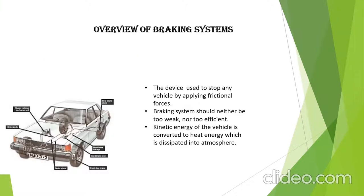Overview of braking systems. A braking system is a device or a set of devices used to stop any vehicle by applying frictional forces. A brake which serves to slow down the vehicle should not be too weak, but interestingly, when designing a brake system it should be taken care that it is not too efficient. A too strong braking system would expose us continuously to the ill effects of sudden brake application. If the vehicle is stopped abruptly, the passenger may hit the front seat. Hence, too efficient a braking system is not required.